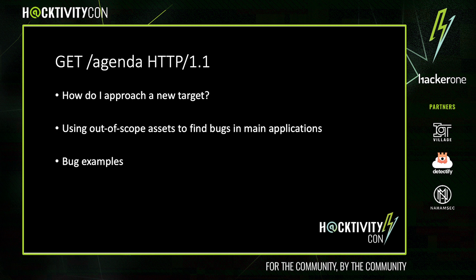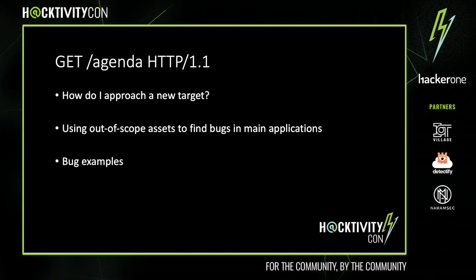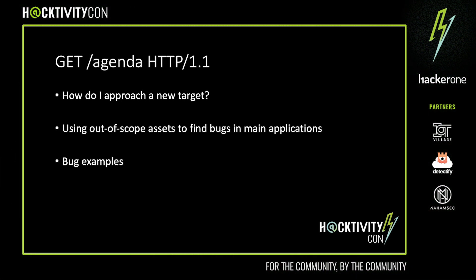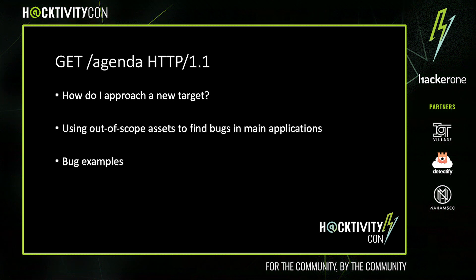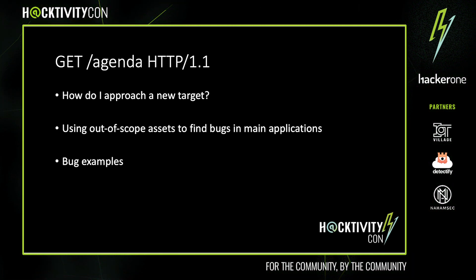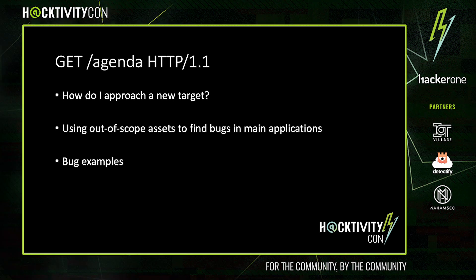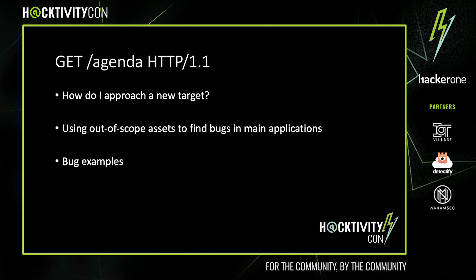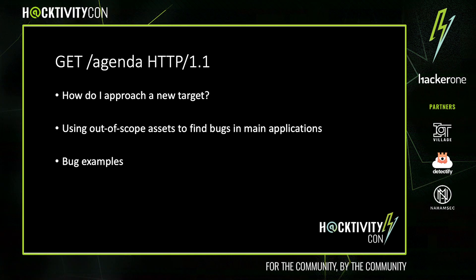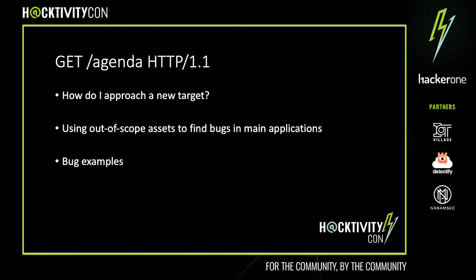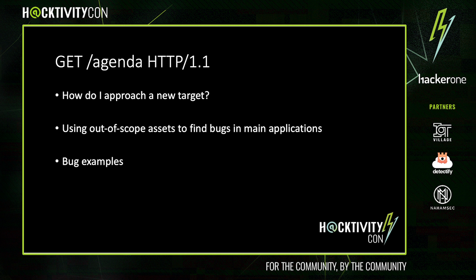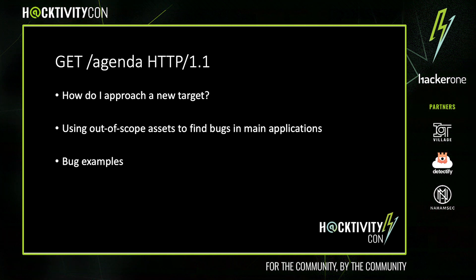To start this off, I'm going to talk about how I approach an application when I start hacking, how using out-of-scope assets can result in impactful bugs in the program's core assets, and lastly, I'll show a few examples of bugs I found. Unfortunately, I must redact most of the details, however I can still show you guys the techniques I've used.